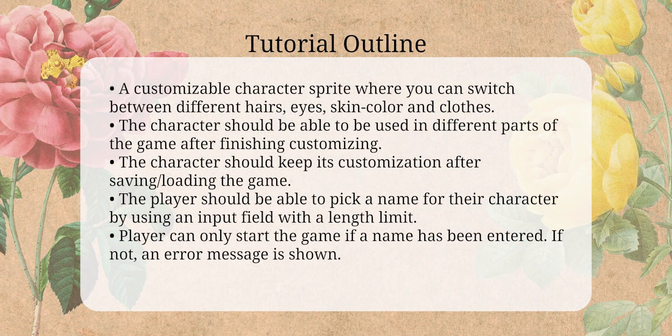Now let's have a look at the tutorial outline. We want to be able to create a customizable character where we can switch between different hairs and eyes, for example. This character should be able to be used in different parts of the game, such as together with a piece of dialogue. We also want to make sure the customizable character saves its looks after the player has finished customizing it. So when the user saves and then loads a game, the character they created earlier should be loaded back up. The player should also be able to pick a name using an input field, and that name will be used with the character throughout the game. The player can only start the game if a name has been entered, and if they haven't, an error message will be shown instead.